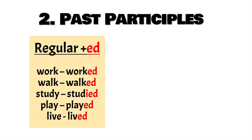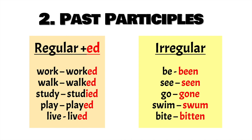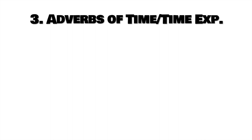These are some of them. The majority are regular past participles. If we look at the irregular ones, you have to learn them — I listed just a few of them so that you have a picture of how they can change. Now let's take a look at the third point, which is adverbs of time, or time expressions.